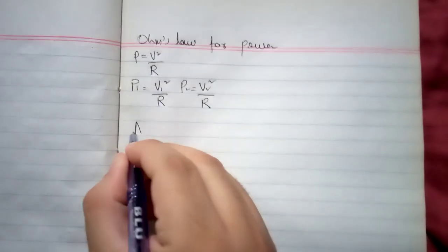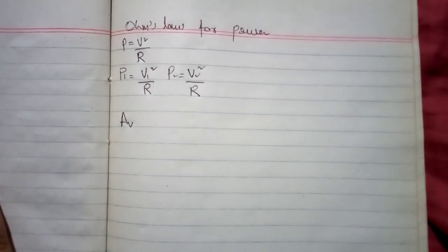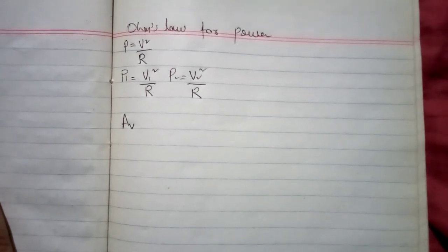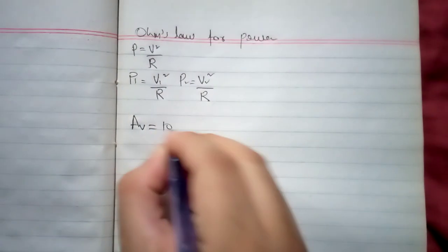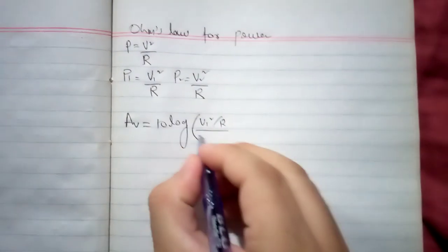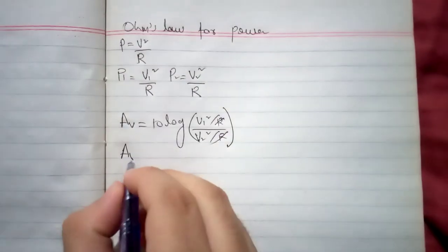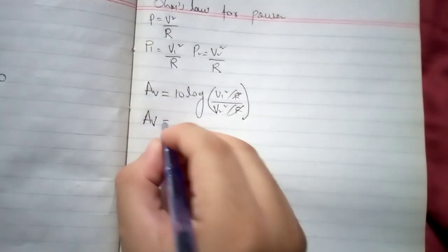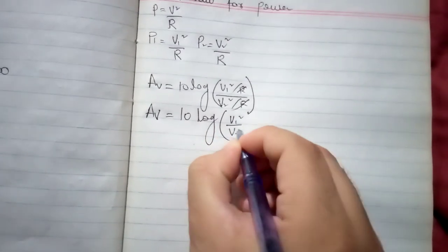Now keep these formulas of P1 and P2 into the formula of power gain. You will get the formula of voltage gain now, and the symbol is AV. You can see I have written V into the subscript. Why? Because it is now the voltage gain, so to represent voltage gain we are using the symbol AV. So AV is equal to 10 log V1 square upon R divided by V2 square upon R. R will be cancelled by this R, and AV is equal to 10 log V1 square divided by V2 square.